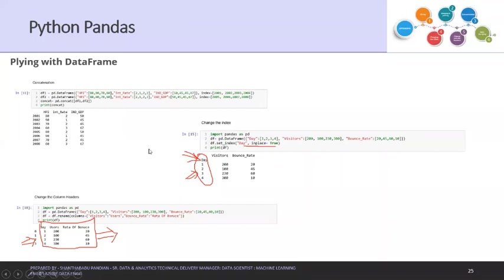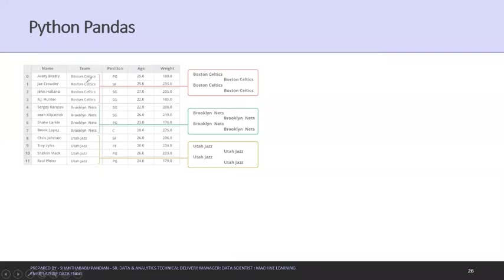In the same way, you can group the data. I have samples here — you can group by a value and get results. For example, if you want to find teams like Boston Celtics or Brooklyn Nets, you can do that. If you want to analyze a specific group, you group the data and do further analysis. I've provided classic samples and I'll share the file with you.